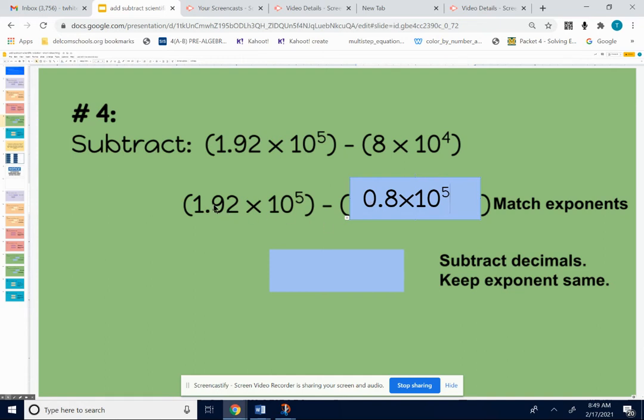So now I have 1.92 times 10 to the fifth minus 0.8 times 10 to the fifth. I'm good to go. I'm going to subtract my regular numbers, my decimals, and I'm going to keep 10 to the fifth the same. When you subtract 0.8, imagine my point being right underneath the other point.